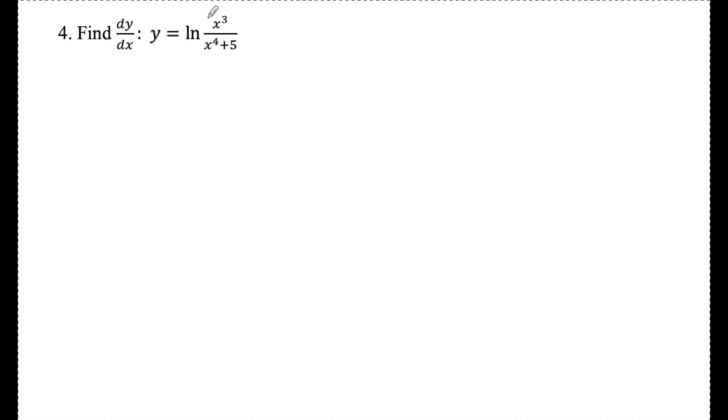Number four: y = ln(x³/(x⁴ + 5)). I could let this entire fraction be u, but then I'd have 1/u times the derivative, which would require the quotient rule and be a pain. Instead, I can apply the rule: ln(a/b) = ln(a) - ln(b).